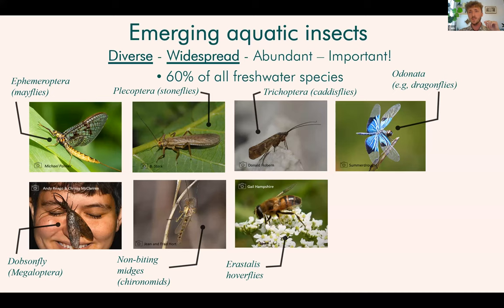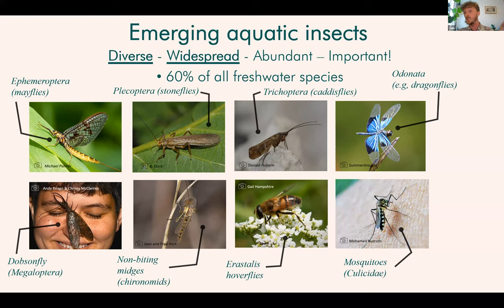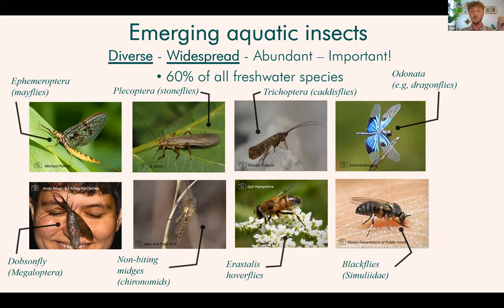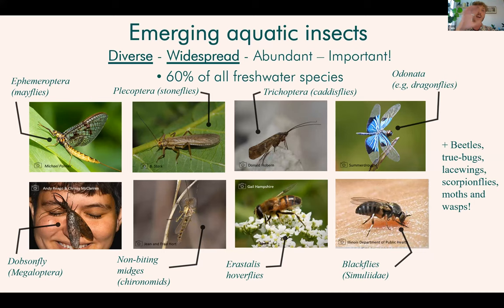There are other flies as well — some hoverflies, of course the mosquito, but also other biting flies such as black flies and a number of different other fly families. This cross-ecosystem life cycle is also found in beetles, true bugs, lacewings, scorpion flies, even some moths and parasitoid wasps, which lay their eggs inside the aquatic larval stage of some of these insects and then hatch out into the terrestrial environment via their bodies, which is pretty cool.